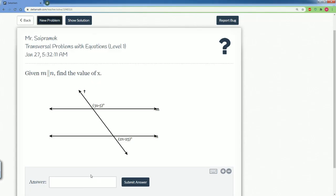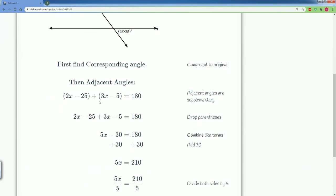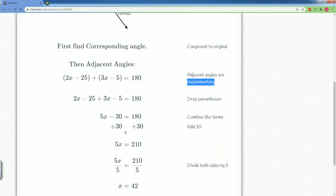Let's check our answer. And we are correct. So they brought the 2x minus 25 up using translation and they saw that they're supplementary, which is what we say as linear pair. And they did the same algebra step as we did.